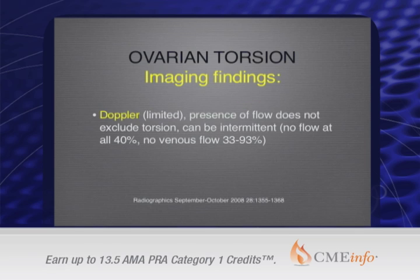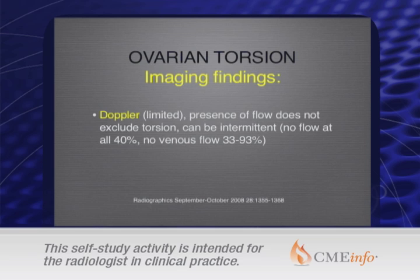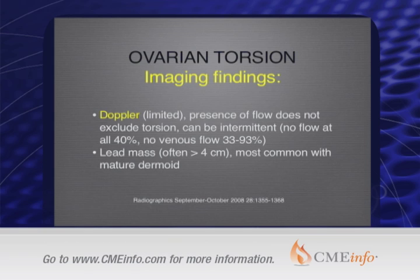Doppler is what we often talk about, but it has limited value. If you see a unilaterally enlarged ovary with follicles pushed to the periphery and the patient has symptoms, but you do see Doppler flow, it doesn't mean the woman doesn't have torsion — it might be intermittent or partial. Absence of flow is helpful; presence of flow is not that helpful.